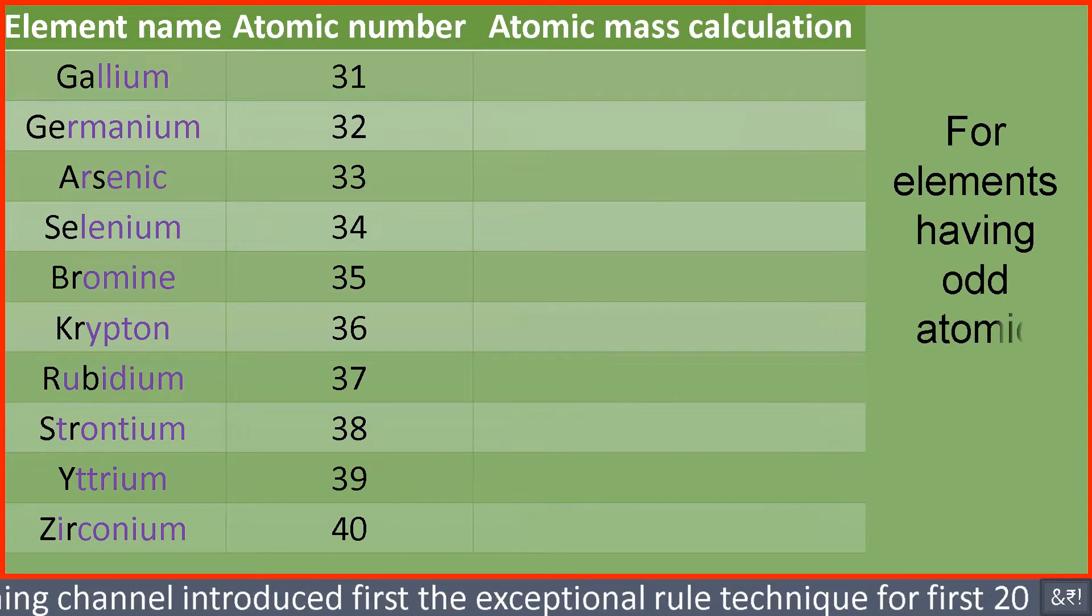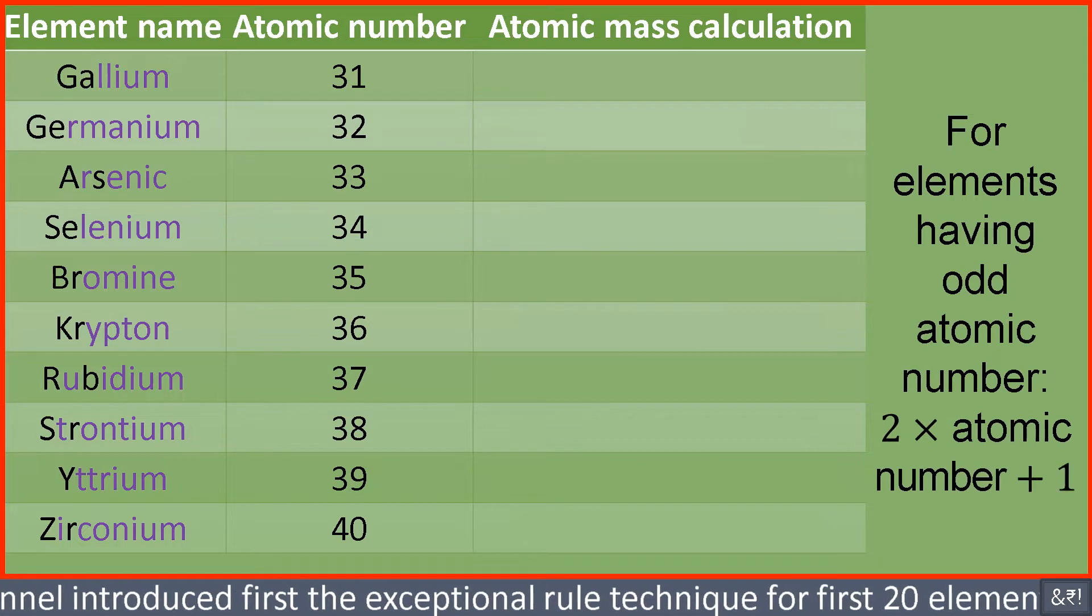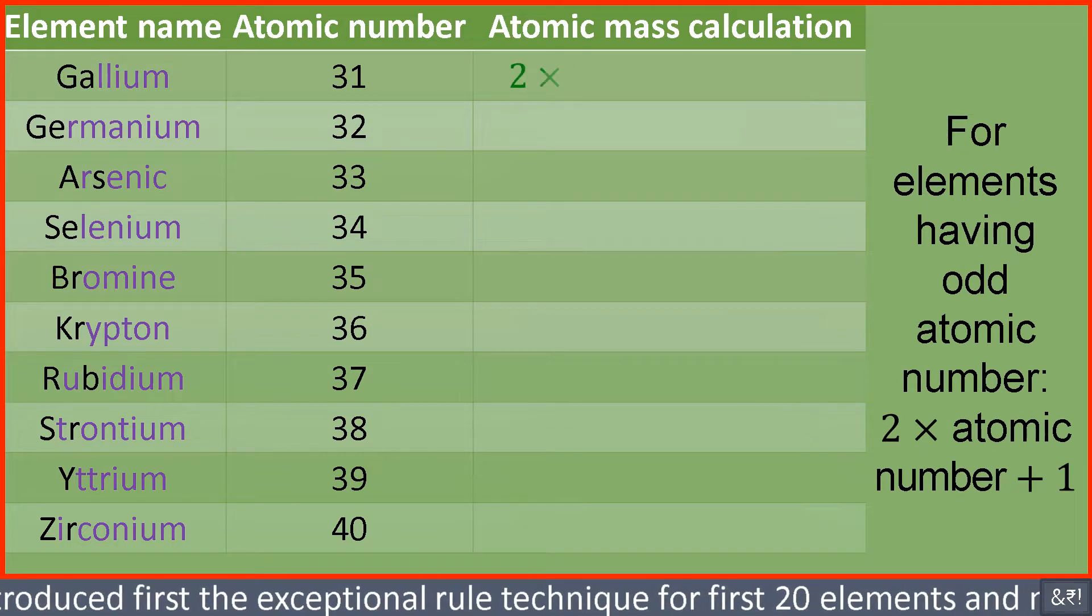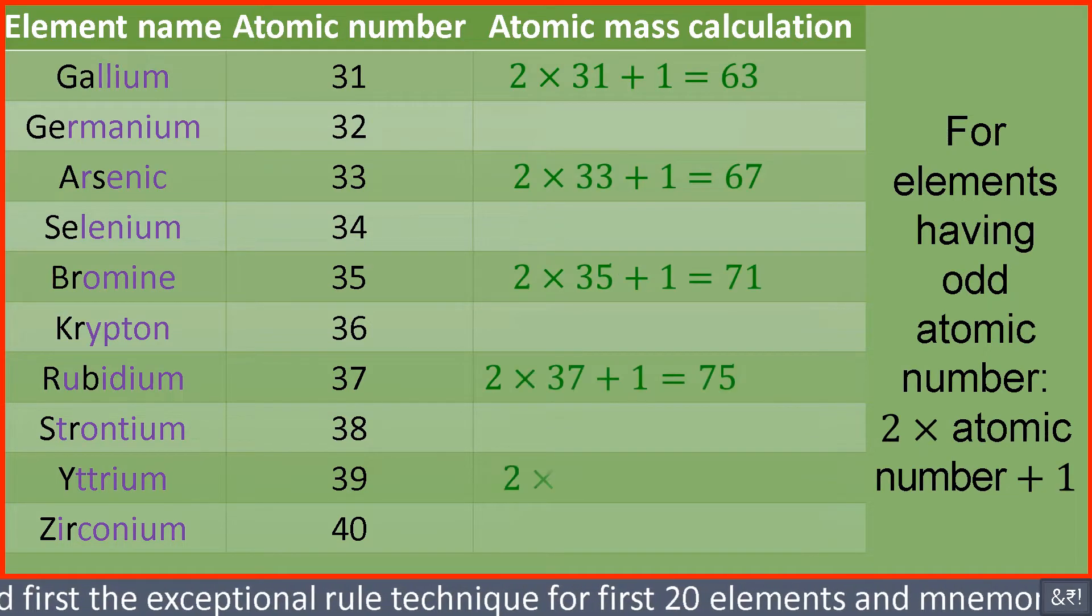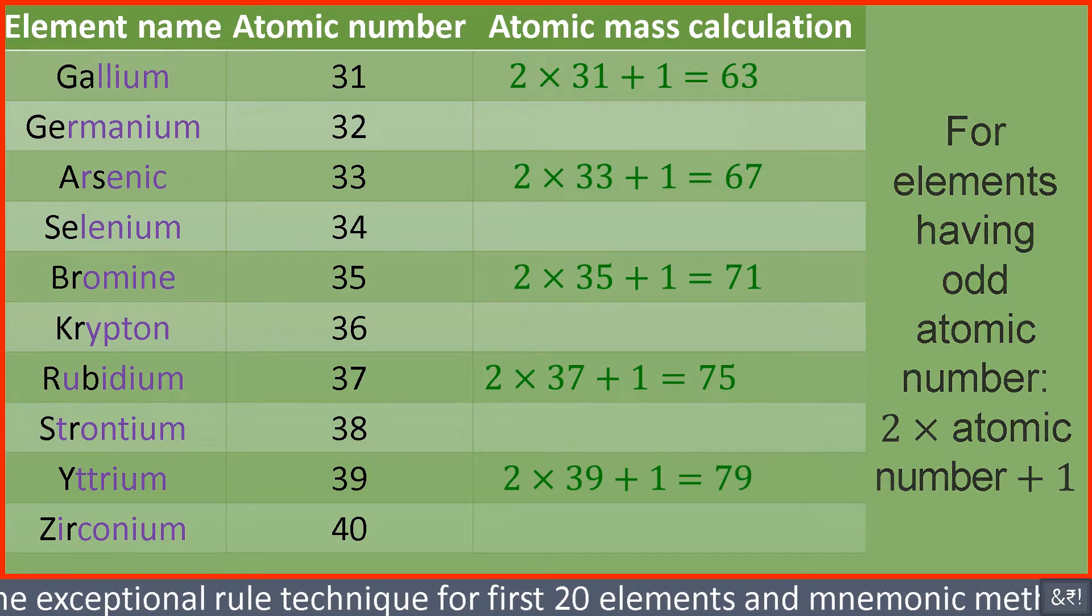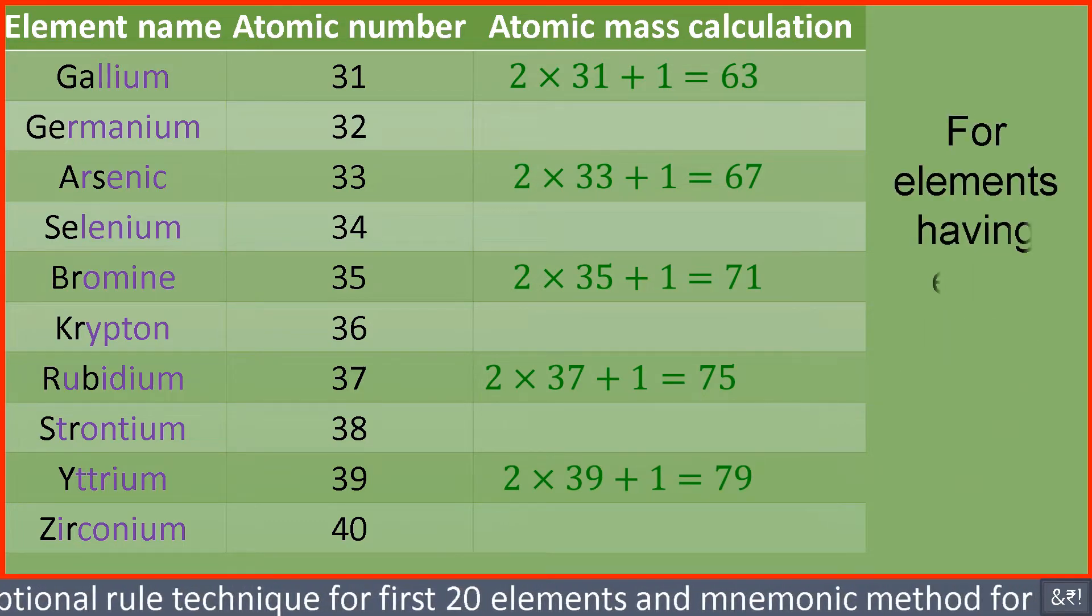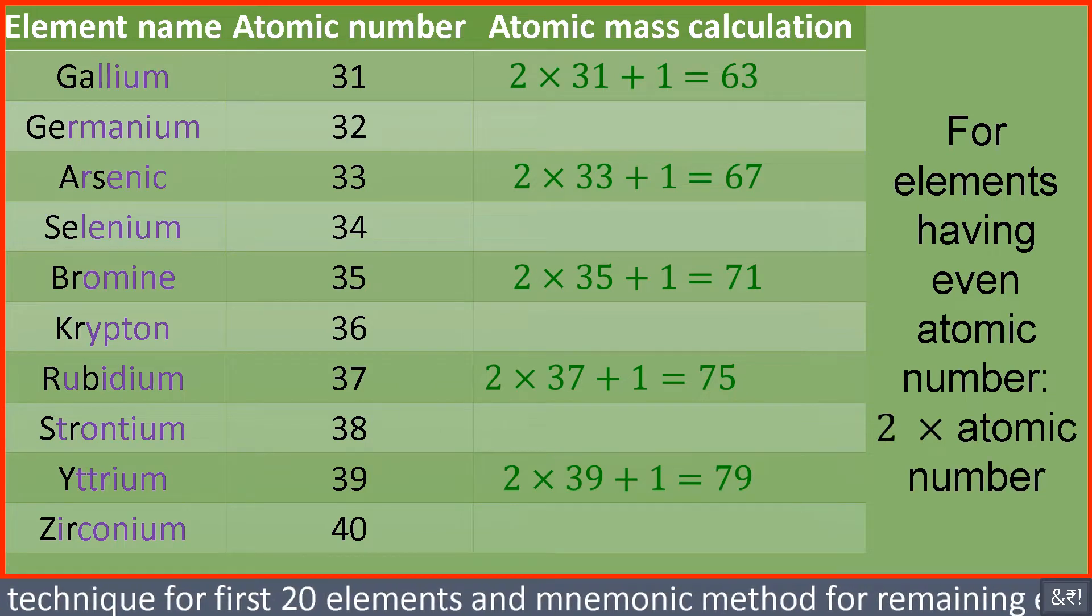For elements having odd atomic number, 2 multiplied by atomic number plus 1. For elements having even atomic number, 2 multiplied by atomic number.